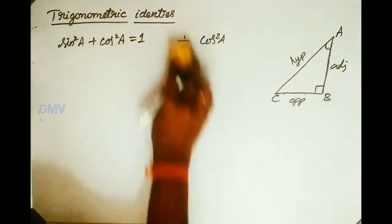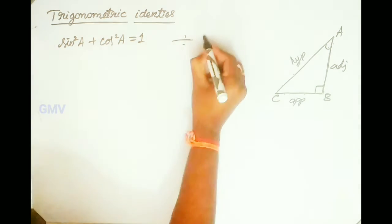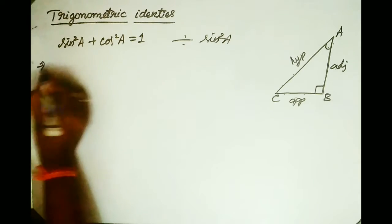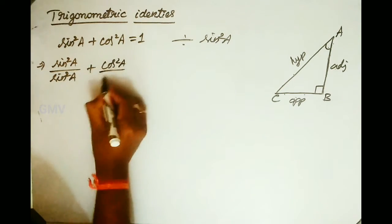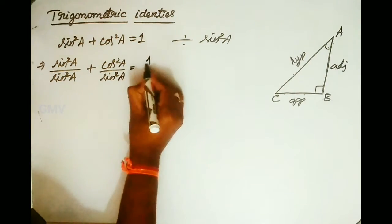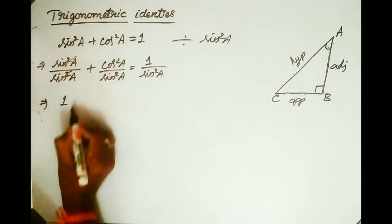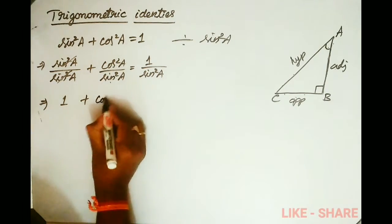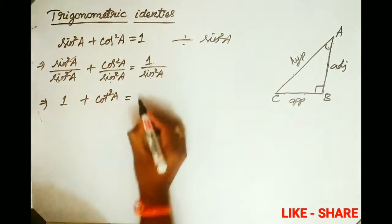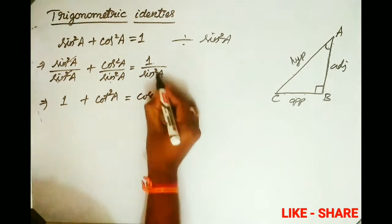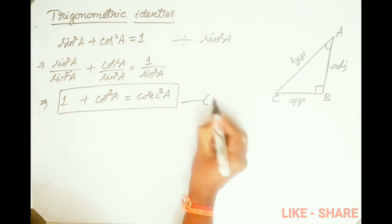Again let us consider the first identity: sin²A + cos²A = 1. Now let us divide the whole equation by sin²A. Then we get sin²A/sin²A + cos²A/sin²A = 1/sin²A, which simplifies to 1 + cot²A = cosec²A, since cos/sin is cot and 1/sin is cosecant. This is the third trigonometric identity.